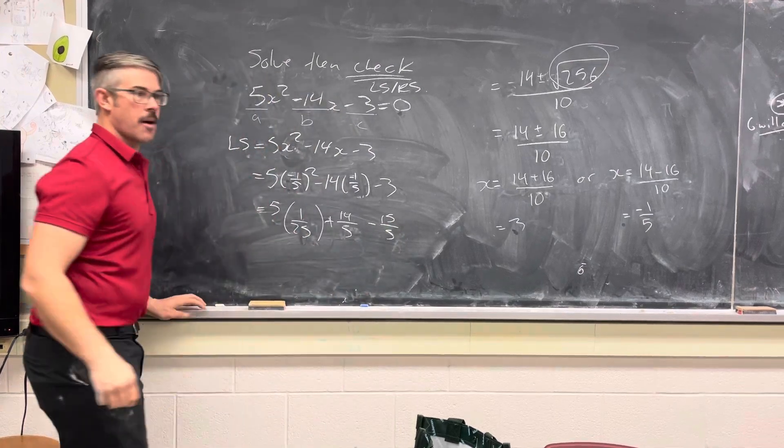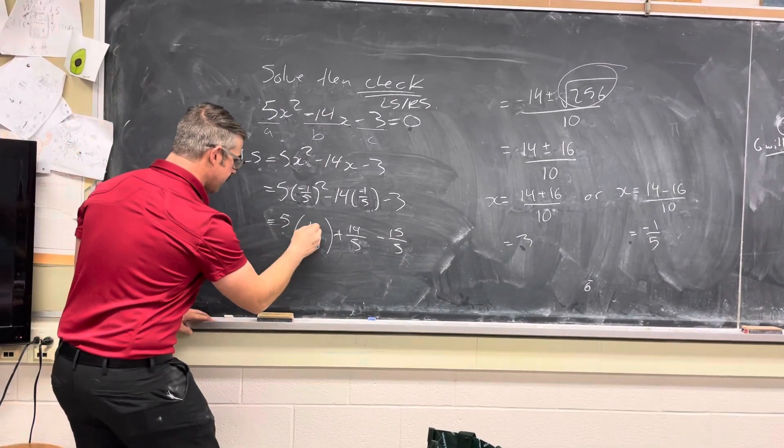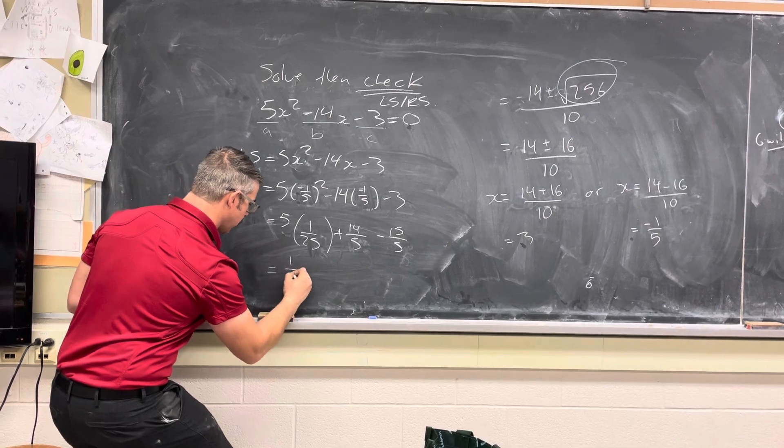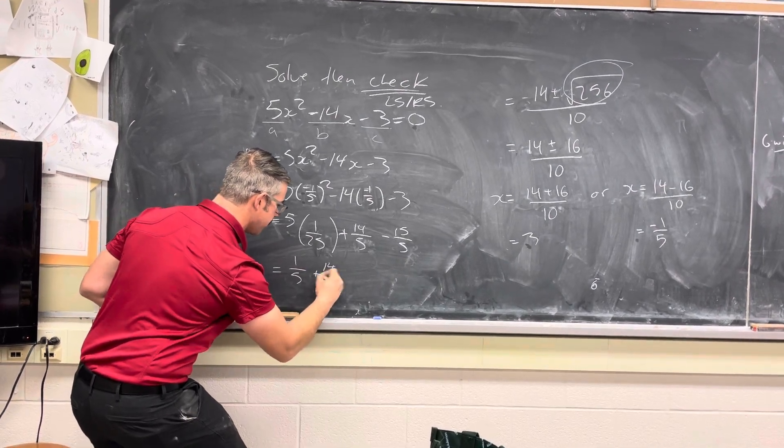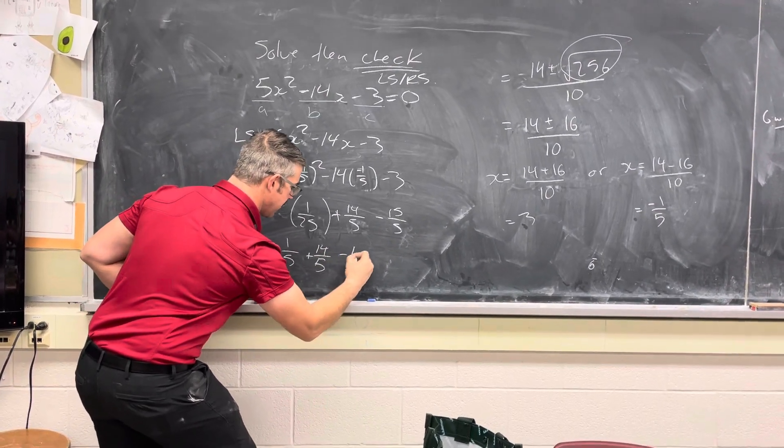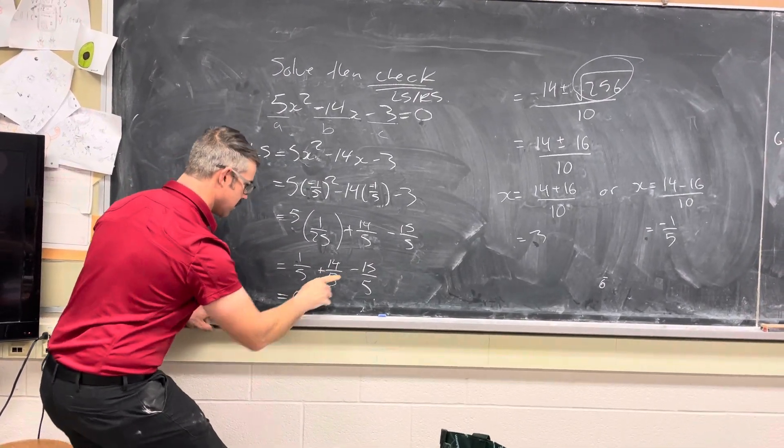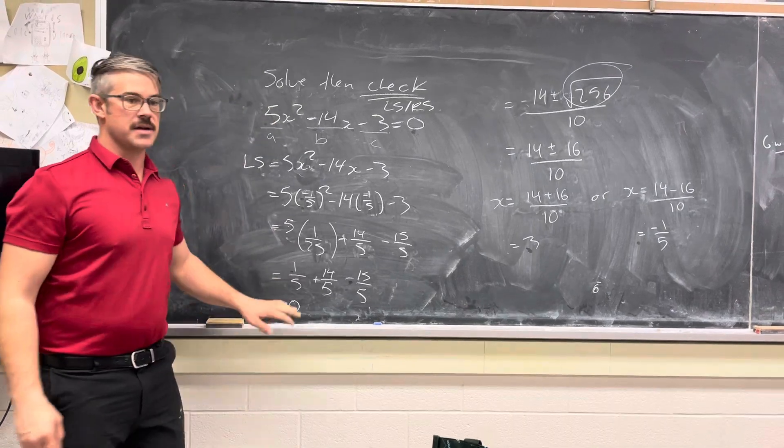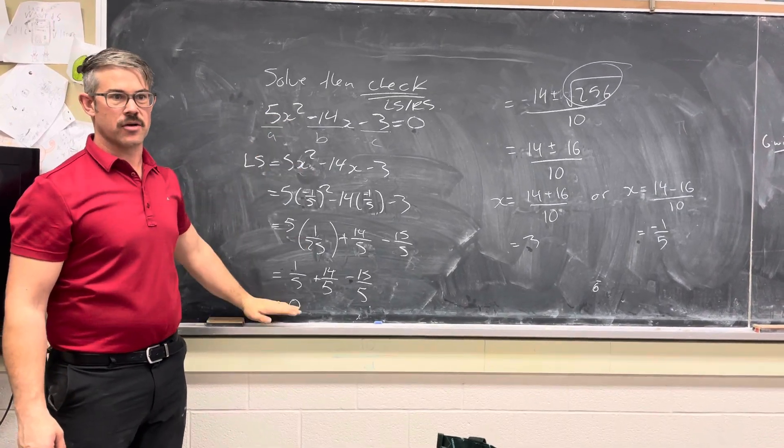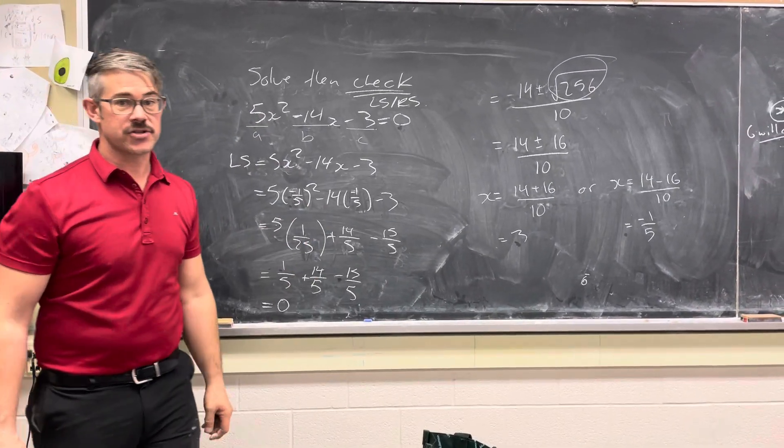I'm just leaving it with a common denominator so that the algebra is a little bit easier. Now, 5 times 1 over 25 is 1 over 5, plus 14 over 5, minus 15 over 5. And I think you can see 1 and 14 is 15, and 15 and 15 makes 0 when you subtract them. And so this means that we're going to be going from our left side to our right side with both of these values, and they've checked out correctly.